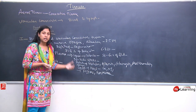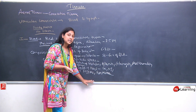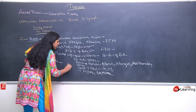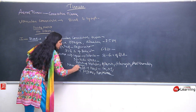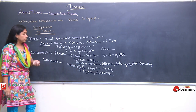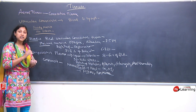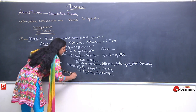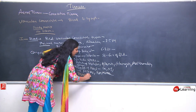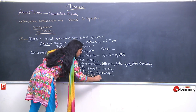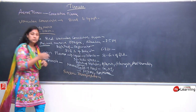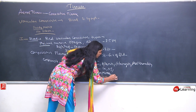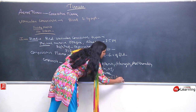Plasma is 92% water, and the rest consists of proteins, minerals, salts, enzymes, and hormones. The function of plasma is transportation — it transports enzymes and hormones throughout the body.